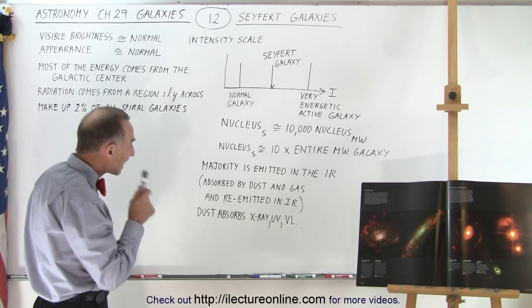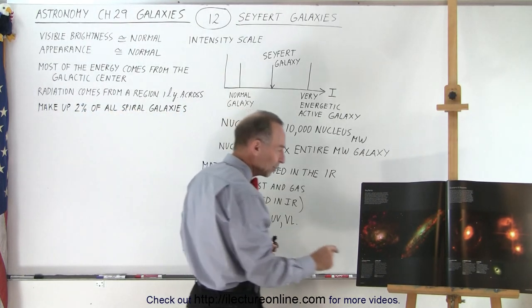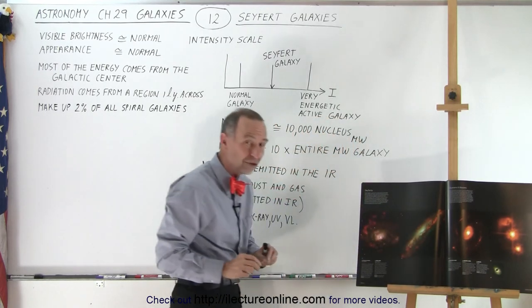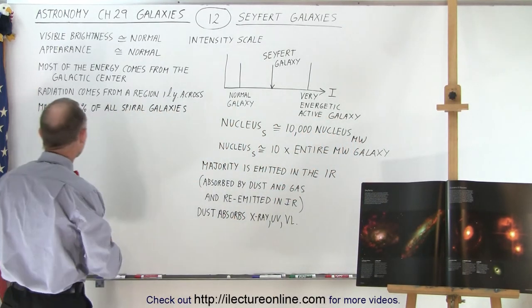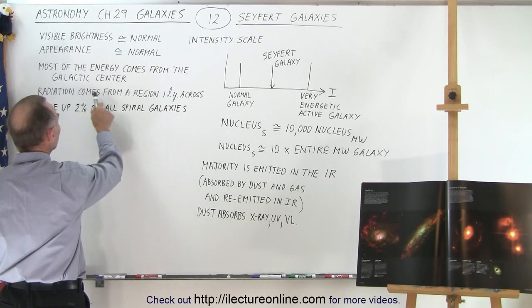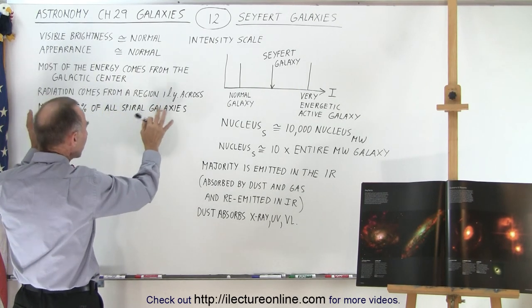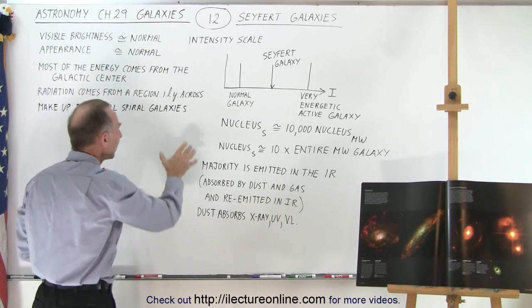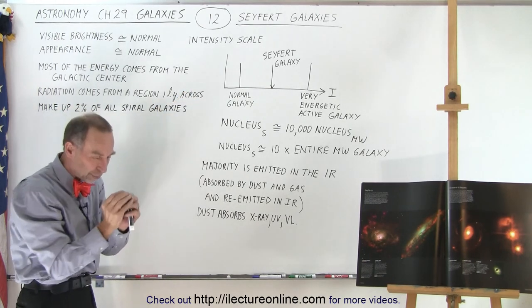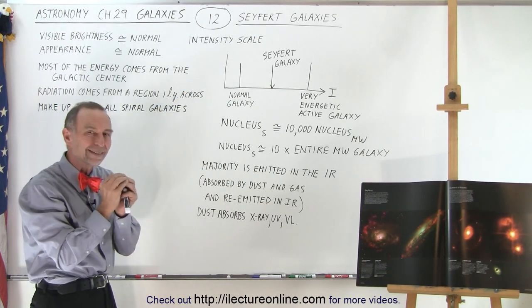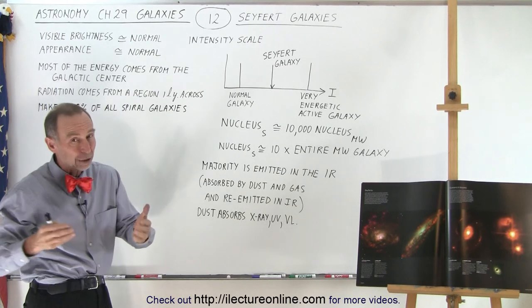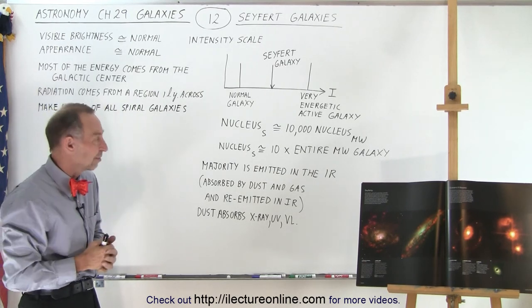But most of the energy of the Seyfert galaxy comes from the center. The center puts out an enormous amount of energy, and when we look closely, we find that the high intensity comes from a region about one light year across. So it's a very small region at the center of this galaxy, and again associated with a supermassive black hole.